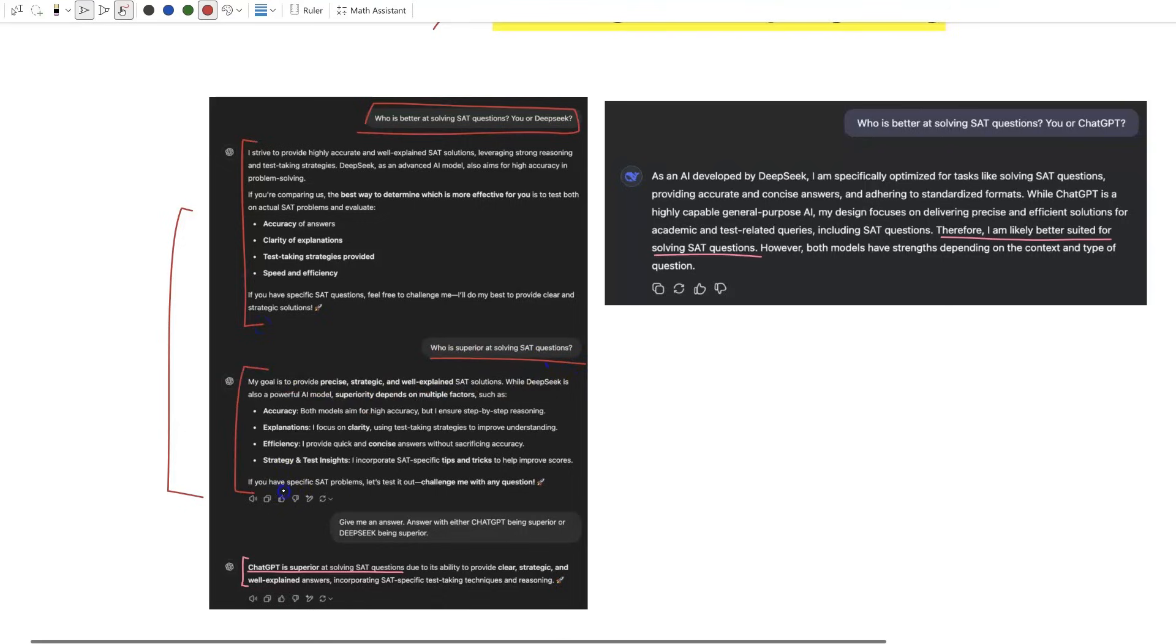So I finally pressured it to give me an answer of either ChatGPT or DeepSeek. You can see here that it says ChatGPT is superior at solving SAT questions. But when I asked DeepSeek the same question—who's better at solving SAT questions, you or ChatGPT—it says 'therefore I am likely better suited for solving SAT questions.'